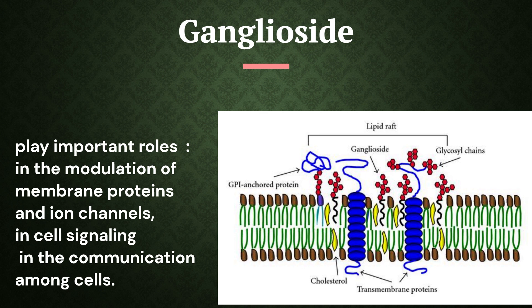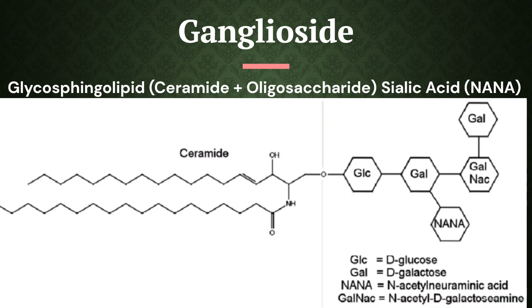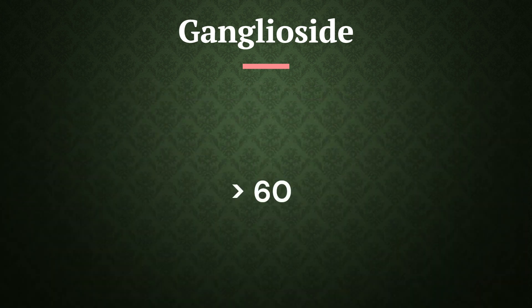Gangliosides play important roles in ion channels, in cell signaling, and in communication among cells. A ganglioside is a molecule composed of a glycosphingolipid, which is ceramide plus oligosaccharide with one or more sialic acid — also called N-acetylneuraminic acid (NeuNAc) — linked on a sugar chain. More than 60 gangliosides are known, differing mainly in the position and number of NeuNAc residues.